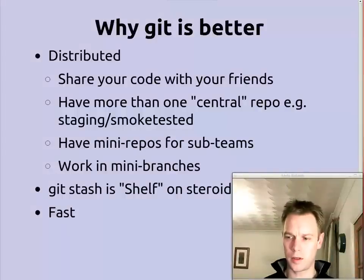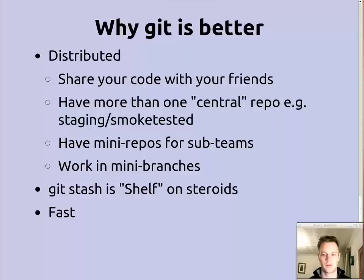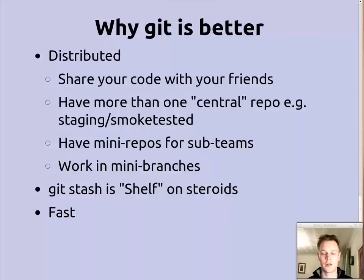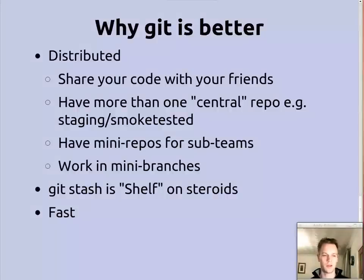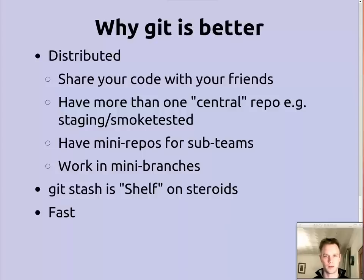So why is Git better? Mostly because it's a combination of distributed and fast. The advantages of being distributed are: it's easy to share code with your friends without sending it back to the central repository. You can send it to your friends, or you and your friends can set up a little repository that just you want to work on, and then later send it to the central repository. All that stuff is kind of built in because all the repositories are equally valid and equally powerful. If you use a public site like GitHub, all that branching, forking, and sending pull requests is really easily accessible to you.